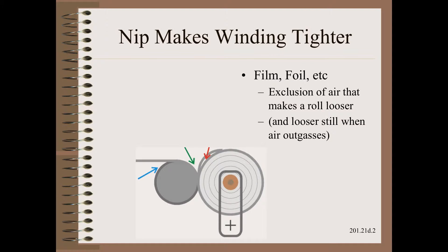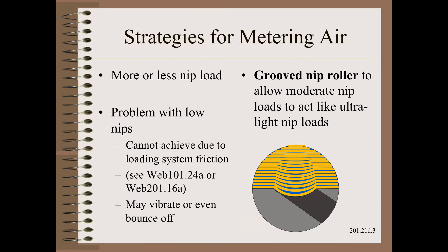What happens on smooth materials such as film and foil is entirely different. The nip makes the roll tighter because it excludes air that makes a roll looser. As we learned in winding mechanics, pound for pound or kilogram for kilogram, the nip may be ten times as powerful as tension for creating wound roll tightness. For smooth materials wound at modest to higher speeds, we want to think about metering the amount of air going into a wound roll to control its tightness.